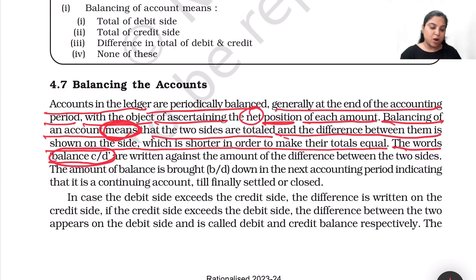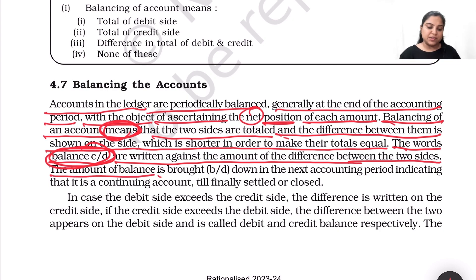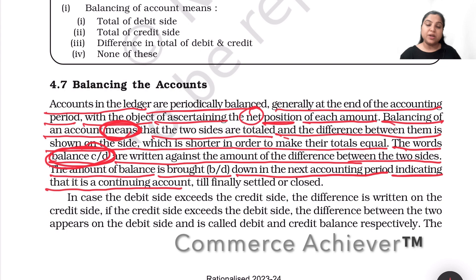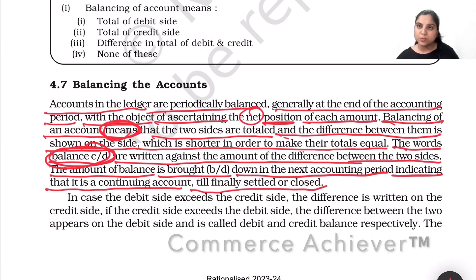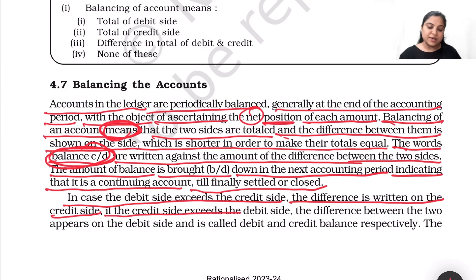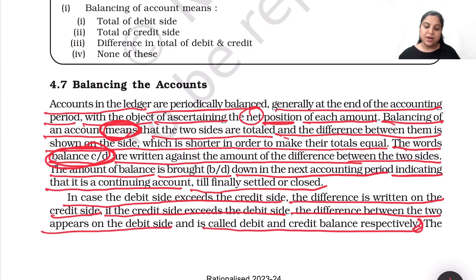The words 'balance carried down' are written against the difference amount between the two sides. The balance is brought down — BD meaning brought down — in the next accounting period, indicating a continuing account till finally settled or closed. If the debit side exceeds the credit side, the difference is entered on the credit side. If the credit side exceeds the debit side, the difference appears on the debit side — called debit and credit balance respectively.